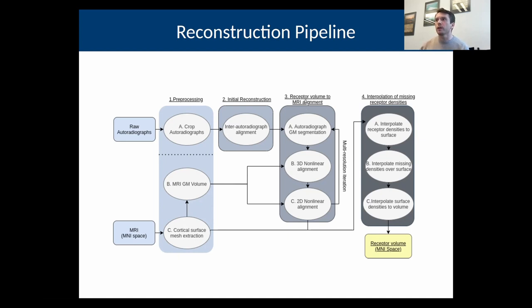Then we align the initial autoradiograph volumes to the donor MRI in the third step. I'm going to talk more about that later. Finally, and this is new from last year, with the help of Conrad we developed an algorithm for interpolating missing receptor densities in sections, basically missing sections for a particular receptor type.